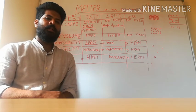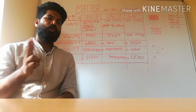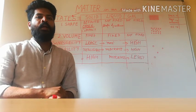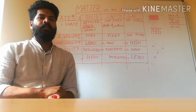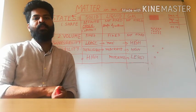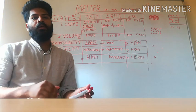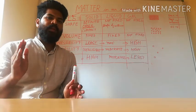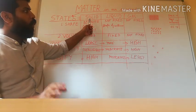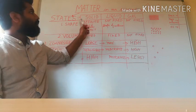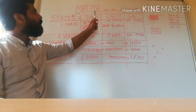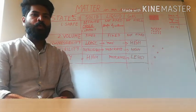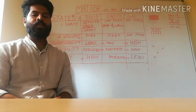Other than these three, there are also two more states. The fourth state of matter is plasma, which is seen in the Sun, and there is a fifth state called Bose-Einstein condensation. We will be discussing only the three commonly observed states of matter — solid, liquid, and gas.